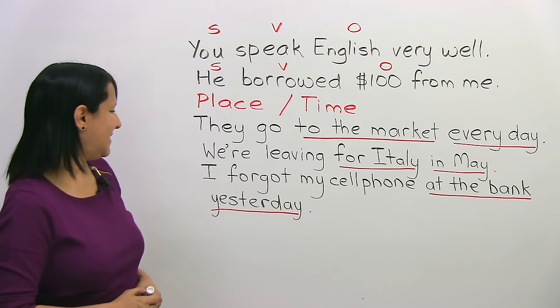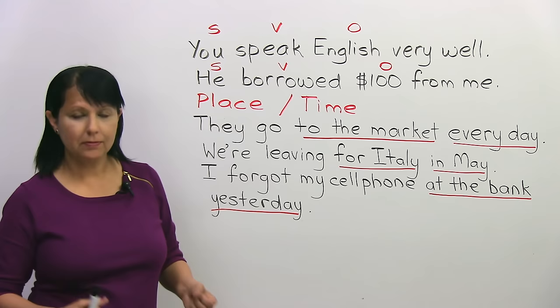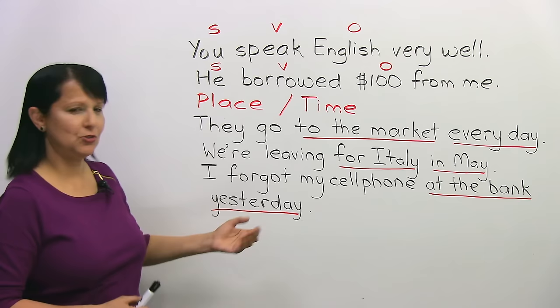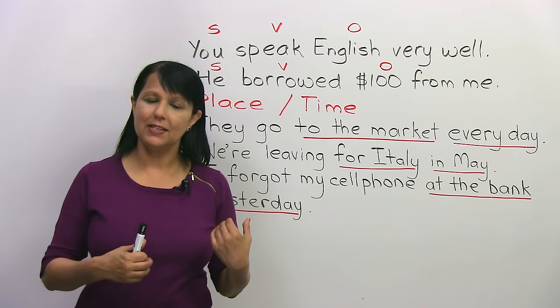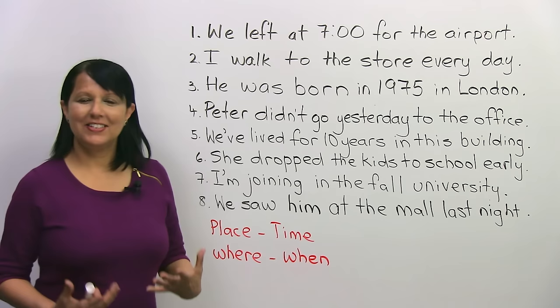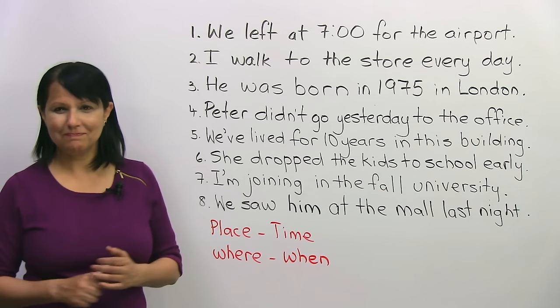'I forgot my cell phone at the bank yesterday.' I forgot my cell phone where? At the bank. When? Yesterday. That's really it. And even though it seems simple, it can get a little confusing, so let's do a quiz to make sure you've understood this simple but important rule. Let's look at these eight sentences — some are correct and some are incorrect based on what we've just learned about place and time.